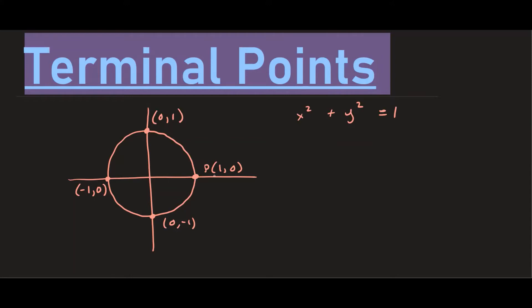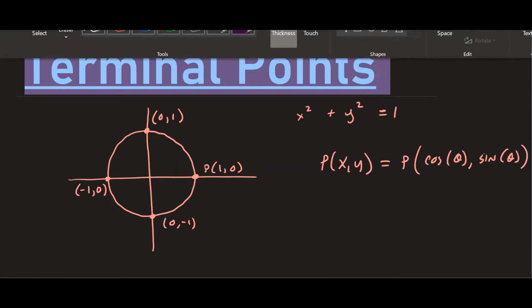We also know that a point (x, y) on the unit circle can be written as (cosine θ, sine θ). That means the x-coordinate corresponds to the cosine of the given angle, and the y-coordinate corresponds to the sine of that angle. Let's see how this is useful.